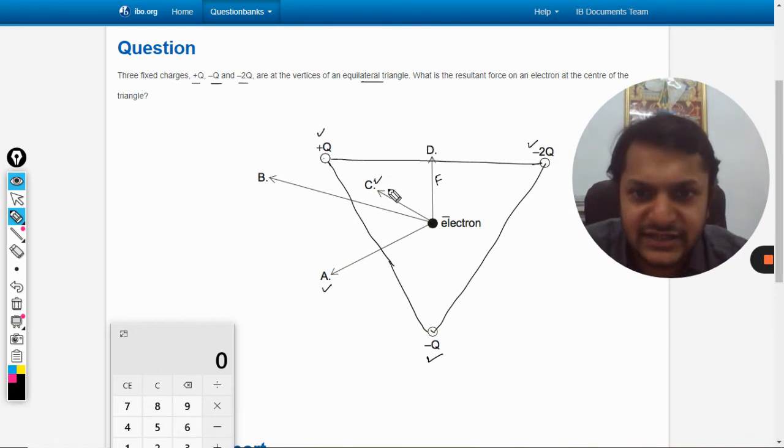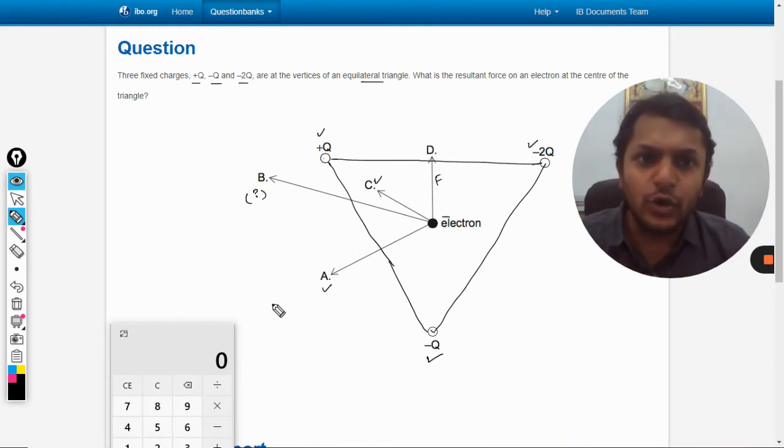These are the three forces that they have shown, but what about this force B? What is this? The question is where is the resultant force.